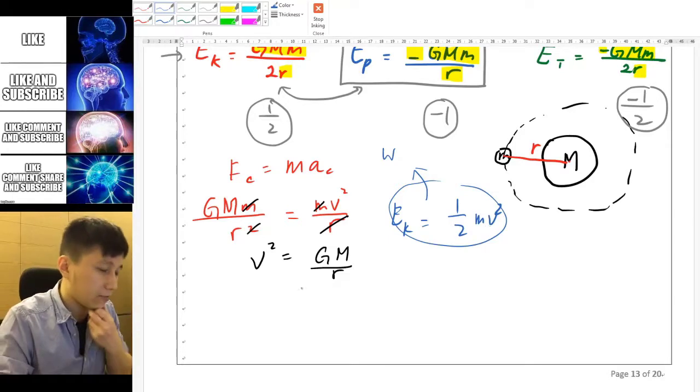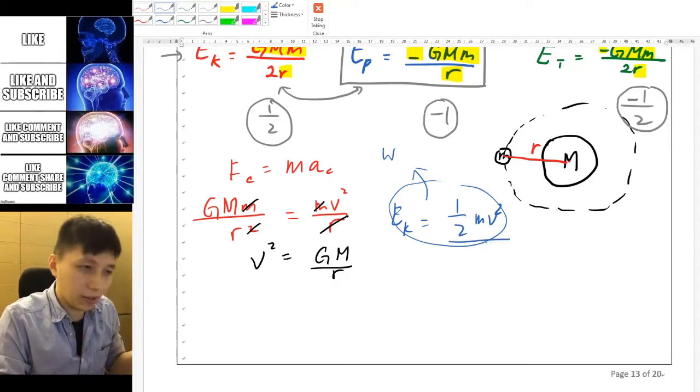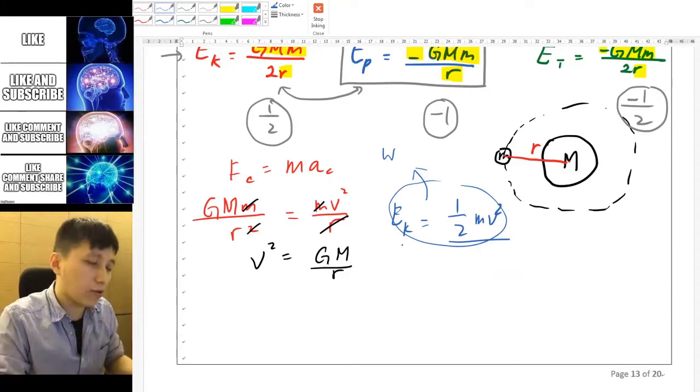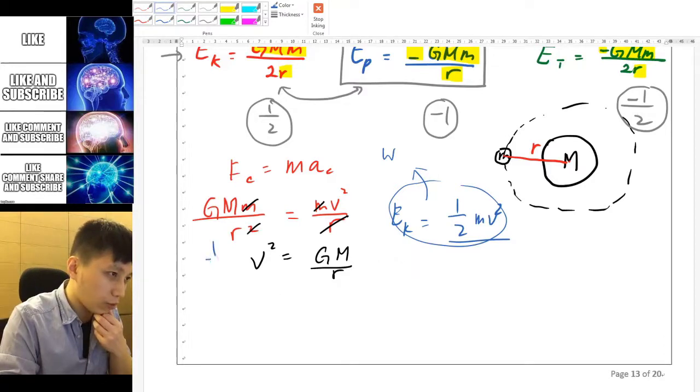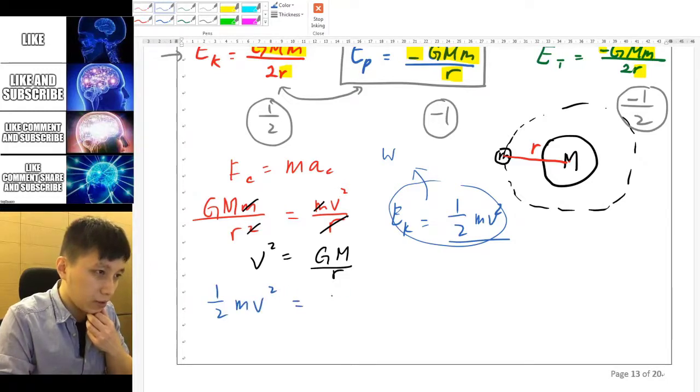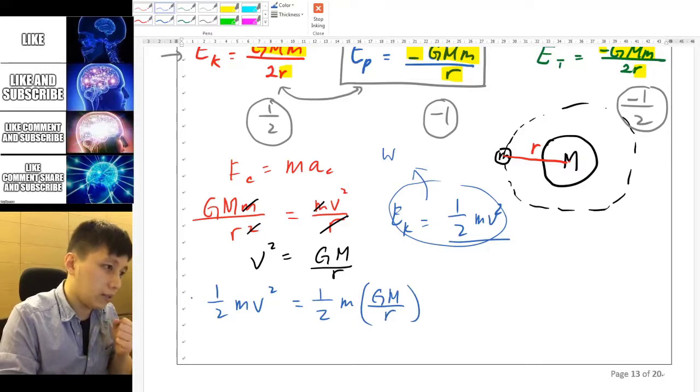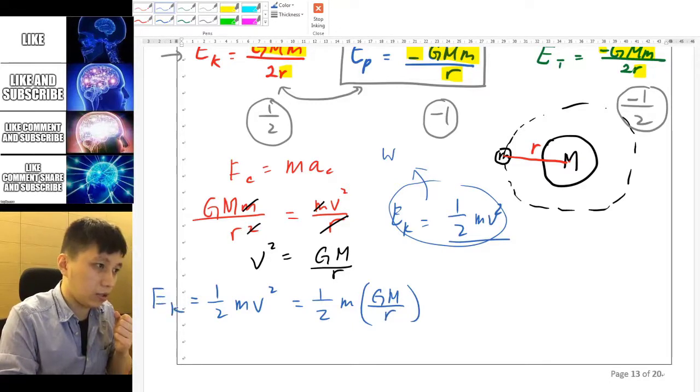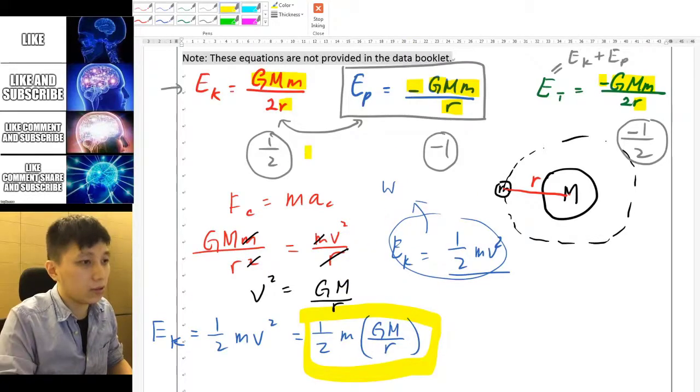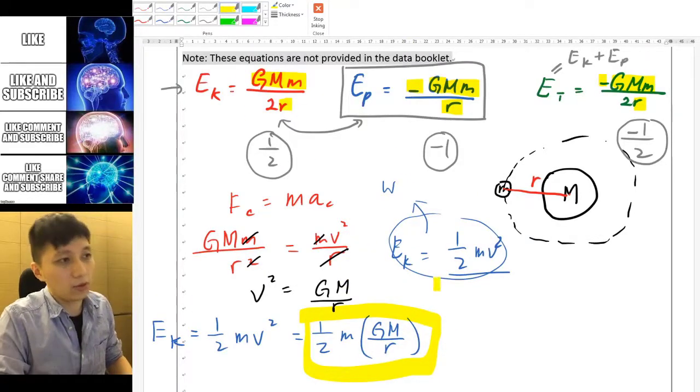So now we are just applying it. So if you just compare this, obviously what you have to do is multiply, kind of a brutal way to do it. Multiply one over two m on both sides. So one over two mv squared equals to one over two small m times the big GM over r. And so that means this should be the kinetic energy of this orbiting object. And if you try to look at this, this is exactly the expression that we want. It's exactly the same. So we are done now.